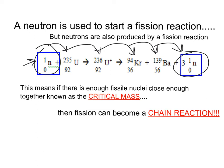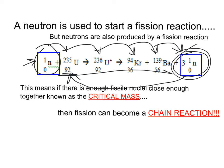If you put a bunch of stable uranium-92s together, you create a chain reaction, because each of those three neutrons can then hit another stable piece of uranium and repeat this process over and over again. If you have enough nuclei close together to cause this, we say that you have a critical mass.